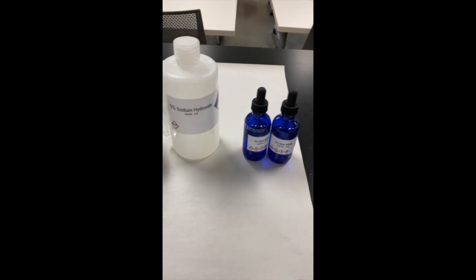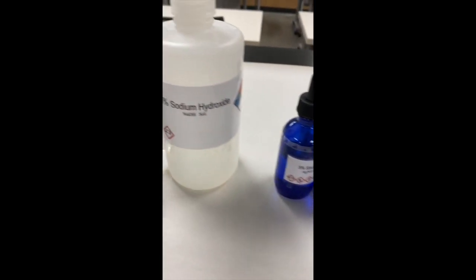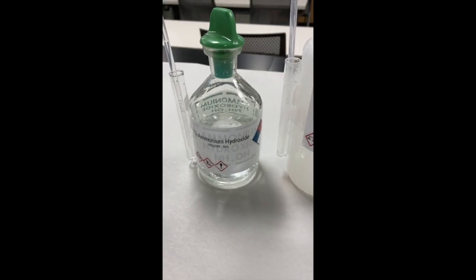We're testing aldehyde and ketone reactions. First I'm going to make the Tollens reagent using silver nitrate, sodium hydroxide, then ammonium hydroxide.